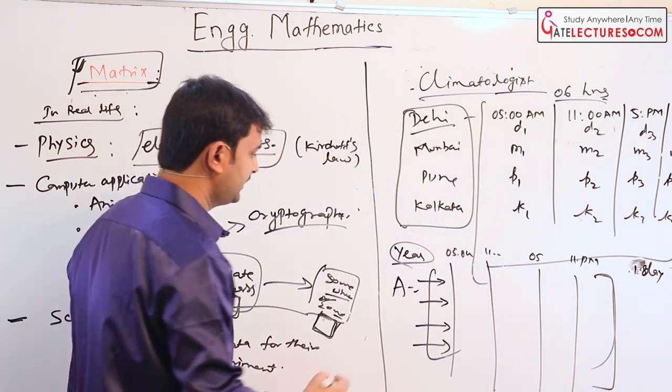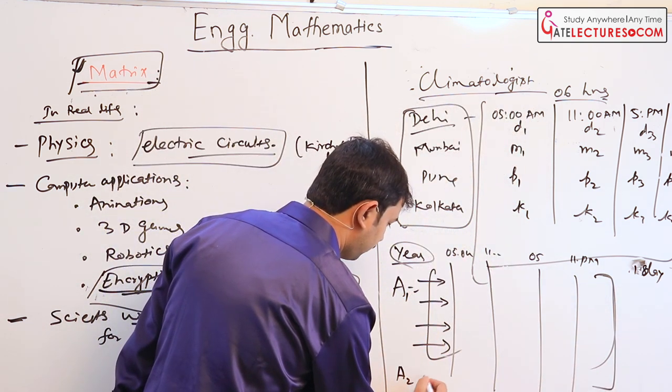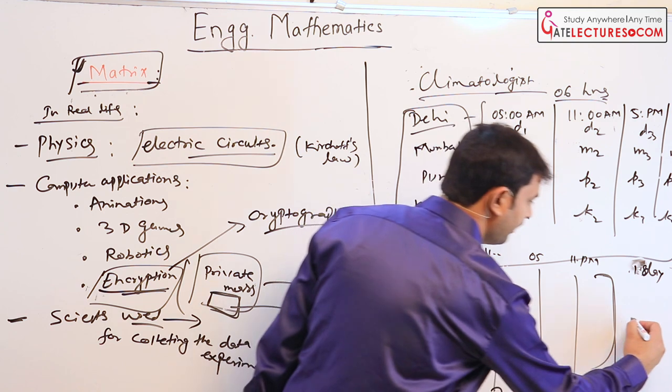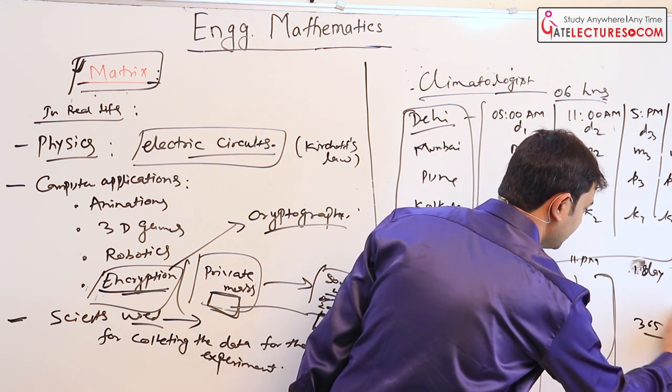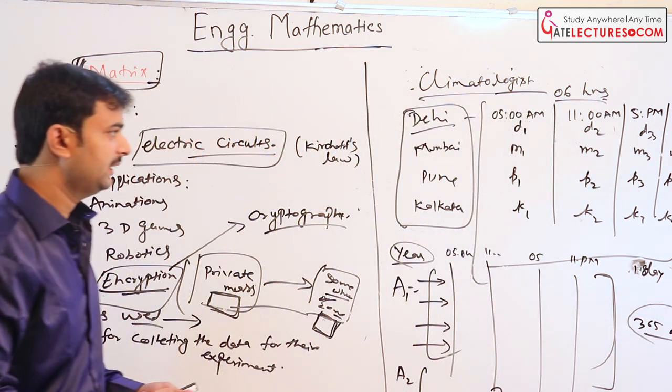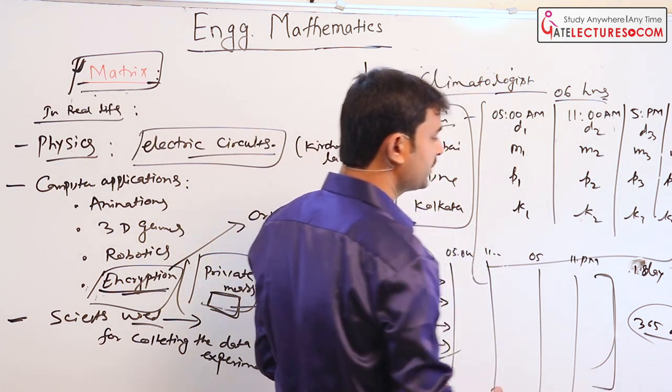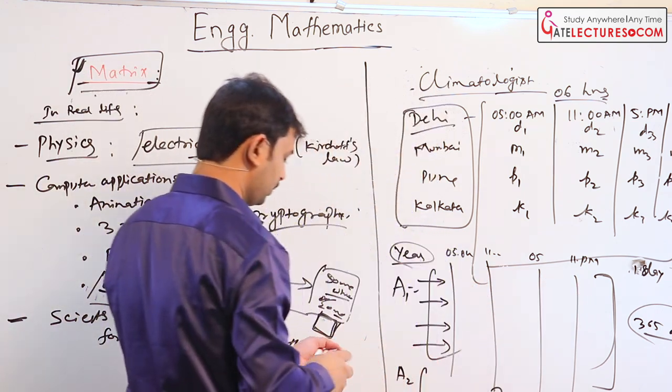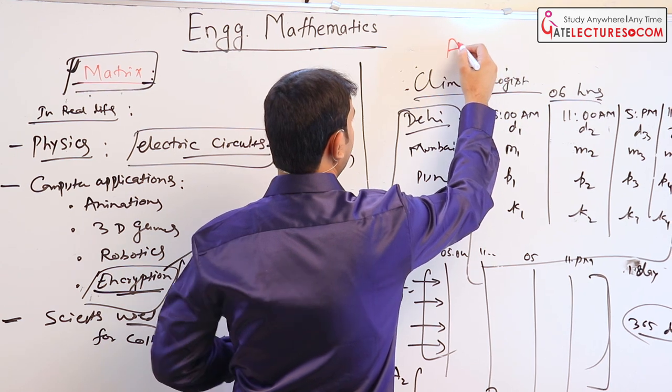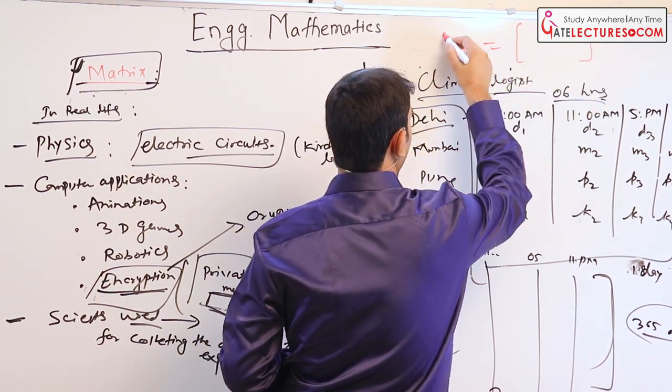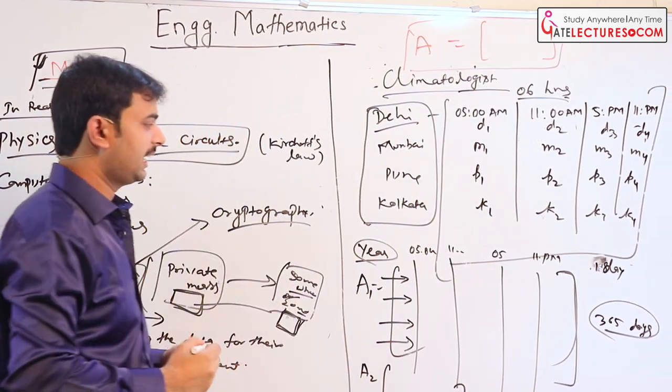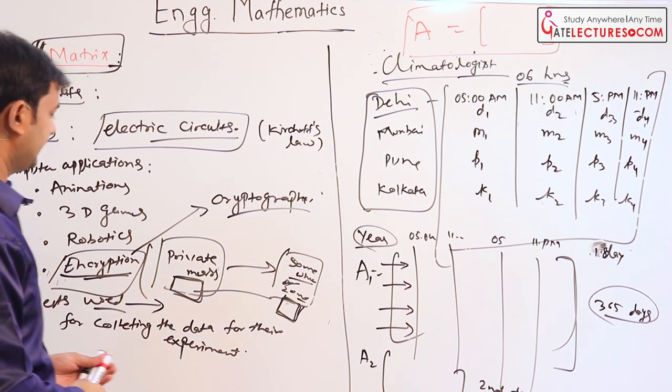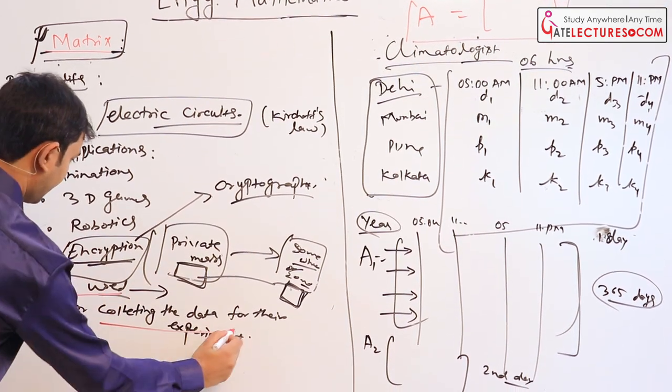Similarly, you can generate another matrix for second day, similarly for 365 days. So in a matrix it is easier to handle such type of huge data and collect all the data and put it in matrix form. Suppose if all the 365 days convert into big A, where now the climatologist analyzes which day is warmer than other days. So this is also an example of a real life problem.